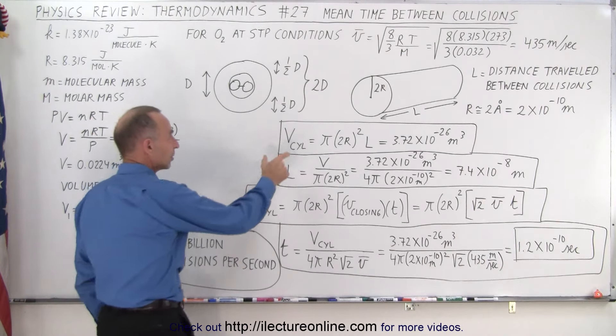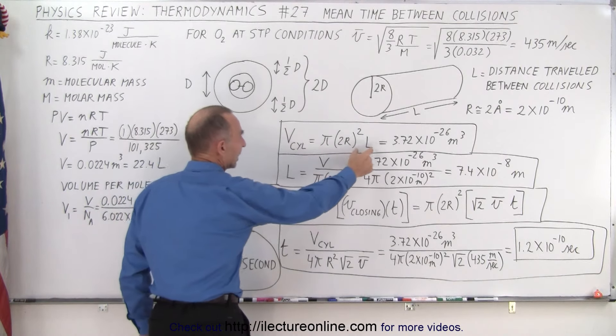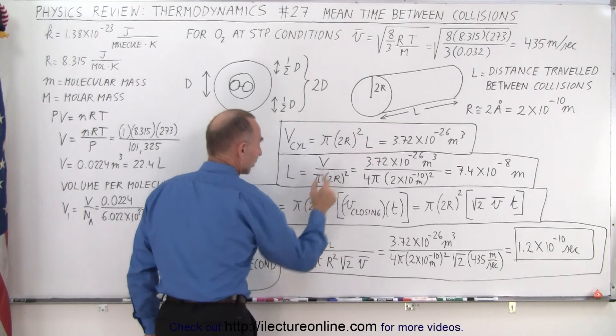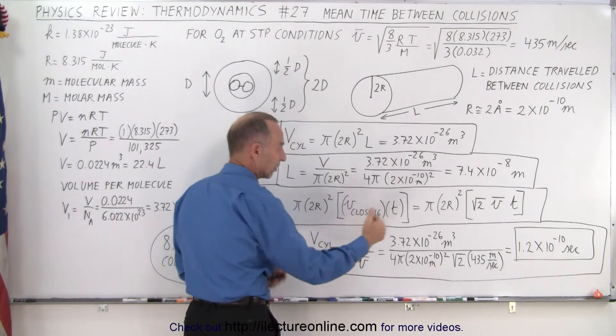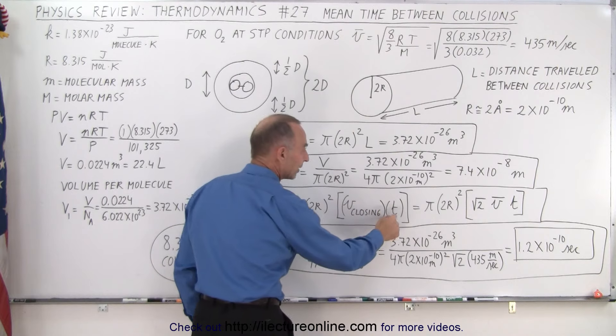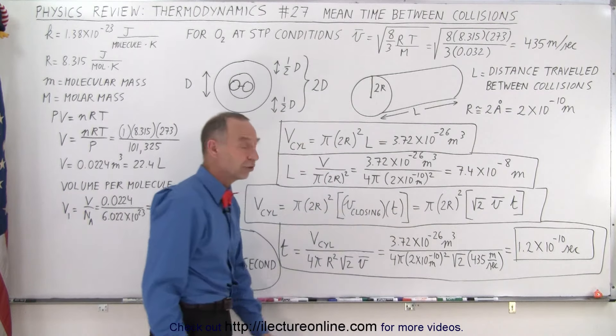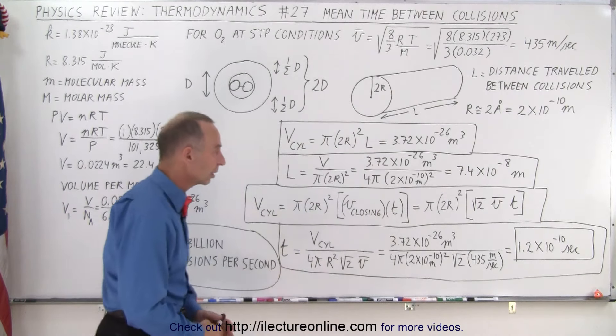We can also express the volume of the cylinder. Instead of writing the length of the cylinder here, we can say that it's also equal to the closing speed, as the two molecules approach one another, times the time between collisions. And that's what we're looking for, time between collisions.